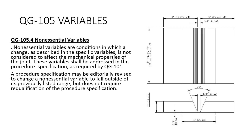QG105.4 Non-essential variables: Non-essential variables are conditions in which a change as described in the specific variables is not considered to affect the mechanical properties of the joint. These variables shall be addressed in the procedure specification as required by QG101. A procedure specification may be editorially revised to change a non-essential variable to fall outside of its previously listed range, but does not require requalification of the procedure specification.